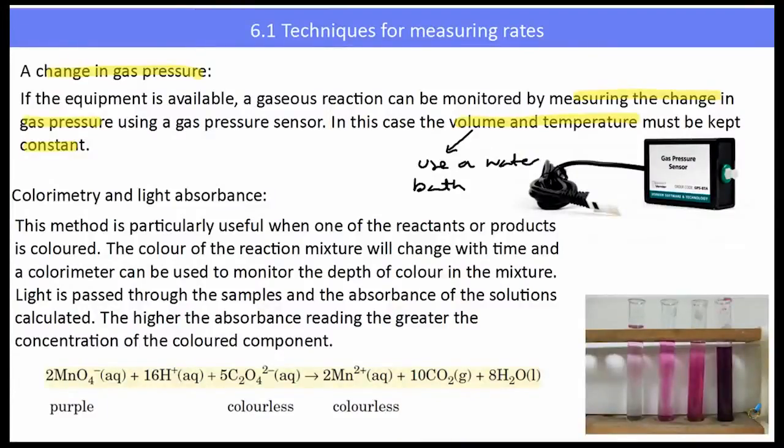In that particular reaction I was using my eyes as my colorimeter, but again, in a more sophisticated situation we could look at how much light can pass through different samples. To use colorimetry and light absorbance, it's particularly useful when one of the reactants or products is colored. The color of the reaction mixture changes with time, and we use this colorimeter to determine the depth of the color in the mixture.